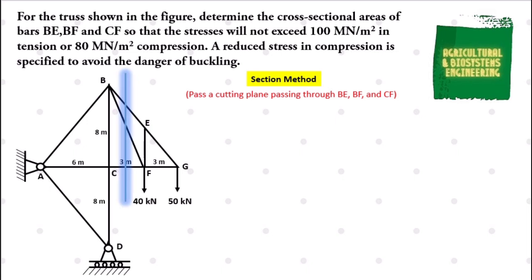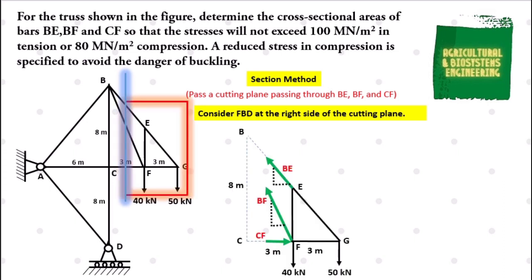In your screen, the blue line is our cutting plane. Next is to make a free body diagram on the right side of the cutting plane. You can see that in our free body diagram, the green arrows represent the bars that we are going to solve later on.